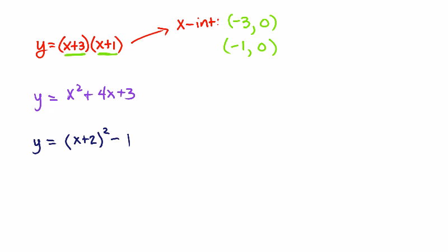The next one is in standard form. Pretty much the only thing standard form can tell me just by looking at it is whether the graph opens up or down. I look at a — a is positive 1, so the parabola opens up. Also, the graph has a y-intercept at 3, so we can say the y-intercept is at (0, 3).